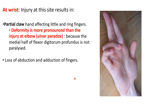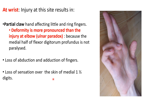Loss of adduction and abduction of fingers will be similar to the elbow injury due to paralysis of the interossei muscles. However, the sensory loss is different: because the palmar cutaneous branch and the dorsal cutaneous branch are given off in the forearm before the nerve reaches the wrist, there will be no sensory loss over the palm or dorsal surface of the hand. The sensory loss will be only over the palmar and dorsal surface of the medial one and a half digits.